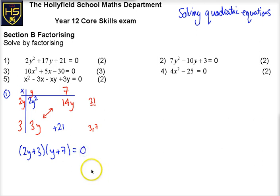And that's equal to 0. So I can solve it. That tells me that either 2y plus 3 is equal to 0 or y plus 7 is equal to 0. In this case, y must be equal to minus 3 over 2 - so subtract 3, divide by 2. Or my other answer is y has got to be minus 7. So they're my two solutions. I've factorised it first of all, put it into the brackets, and then I've solved it.